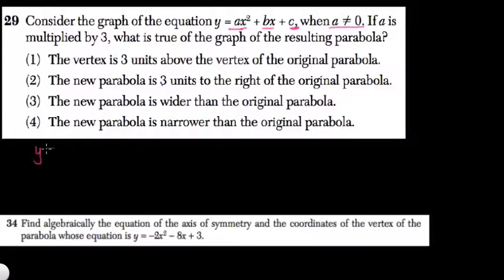And that's the standard form of a quadratic equation in ax squared plus bx plus c format. That just means you have an equation where a, b, and c are all numbers. X and y are your variables, and you're going to get a parabola. Here they say let's multiply a, and just a, by 3. What is true of the resulting parabola?